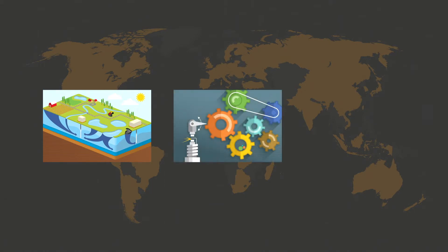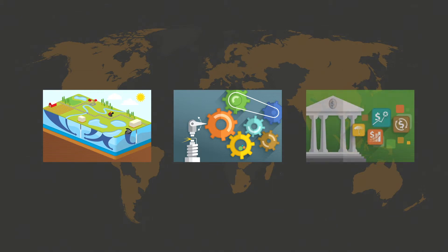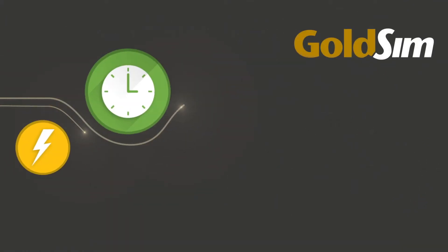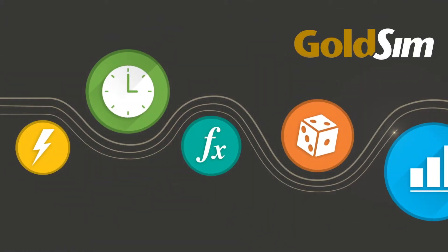GoldSim is also used for evaluating the performance and risks associated with complex engineered systems, such as processing facilities and space missions, to comparing alternative business strategies and modeling the financial risks of large projects. Organizations worldwide use GoldSim simulation software to evaluate, compare, and optimize alternative designs, plans, and policies in order to minimize risks and make better decisions in an uncertain world.